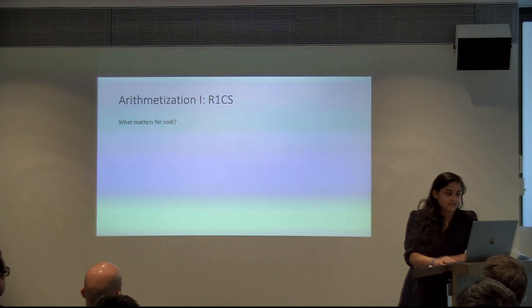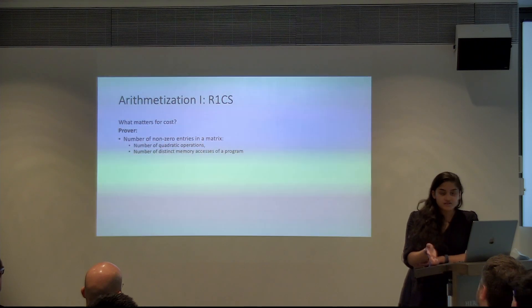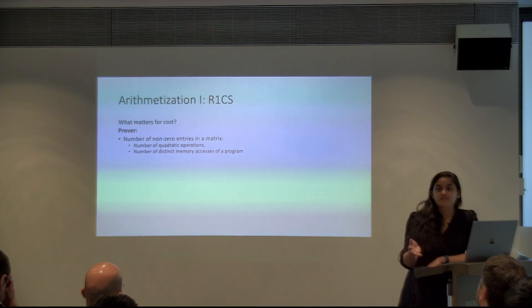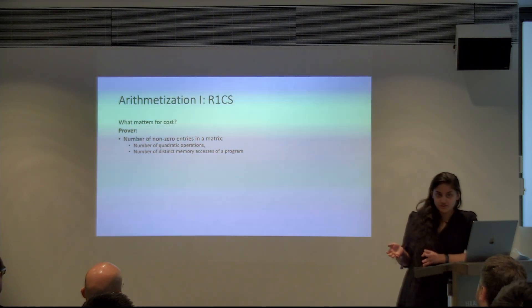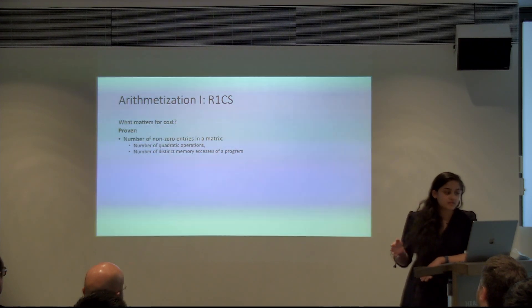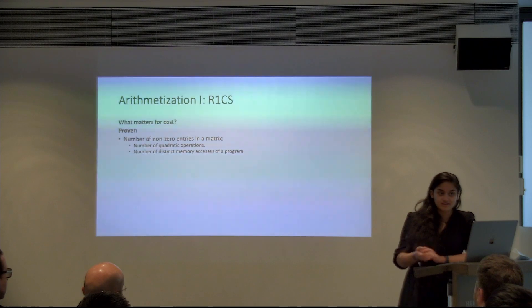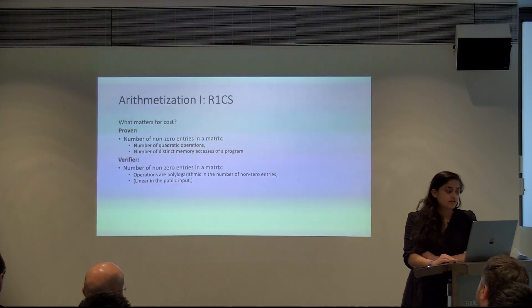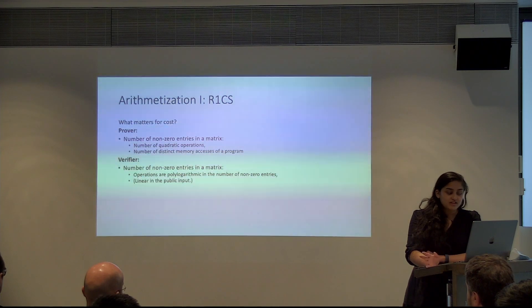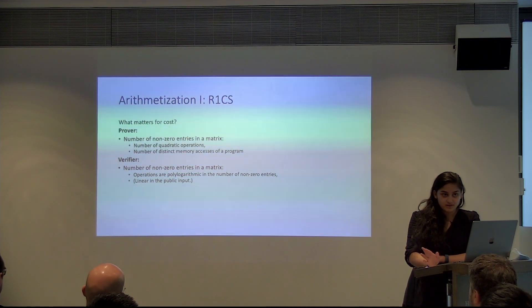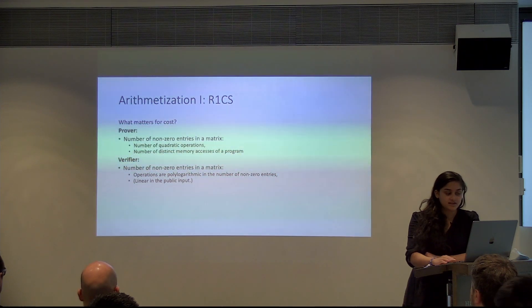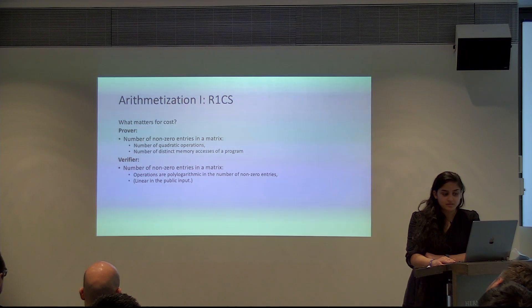So I guess TLDR, what matters for cost? Number of non-zero entries in the matrix. What does that depend on? Like as a programmer, what does that depend on? It depends on the number of quadratic operations required to represent your program and the number of distinct memory accesses of the program. So even if you access the same variable multiple times, each time you sort of access it, it ends up costing you. And for the verifier, again, it depends on the non-zero entries of the matrix, but this time the relationship is polylogarithmic, or some sort of quasi polylogarithmic type expression, and linear in the public input, as I said before.